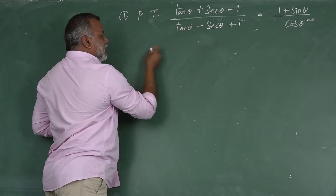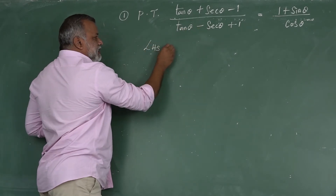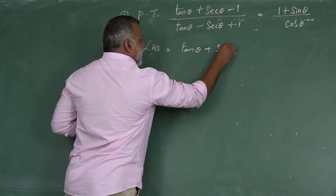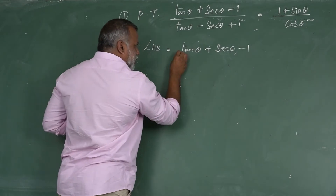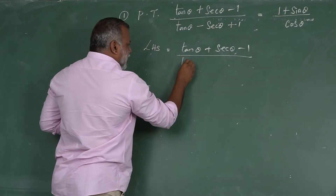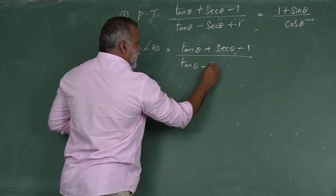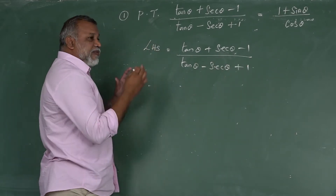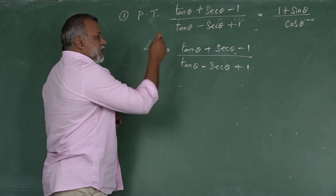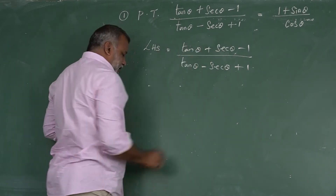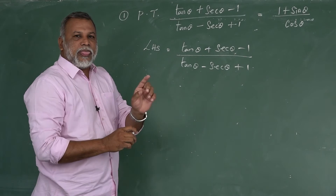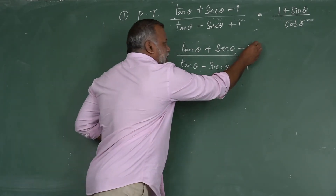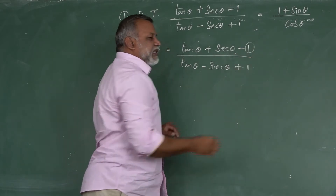Select your LHS side: tan θ + sec θ - 1 divided by tan θ - sec θ + 1. We have the identity related to tan and secant: sec²θ - tan²θ = 1. We want to eliminate this '1' in terms of secant and tan.